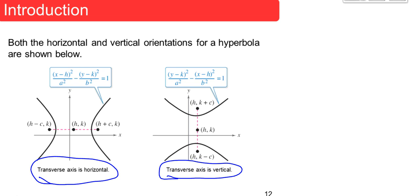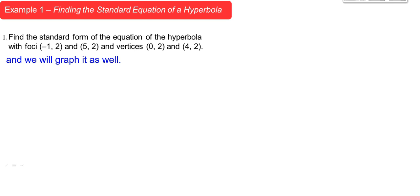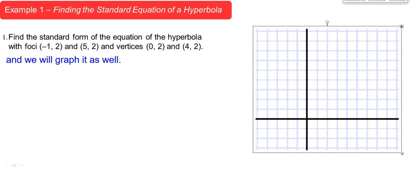Example 1: Find the standard form of the equation of a hyperbola with foci at (-1, 2) and (5, 2), and vertices at (0, 2) and (4, 2). The directions say to write the standard form, and we'll come back to graph it. I'm going to get a piece of graph paper to make this easier. I'll start by plotting those points.